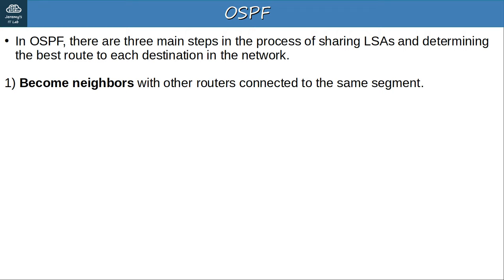Each of these areas maintains a unique LSDB. The backbone area — area 0 — is special: all other areas must connect to it. A network design where area 1 is not connected to area 0 and only connects to area 2 is not allowed in OSPF. Routers with all interfaces in the same area are called internal routers. In this diagram, there are internal routers in area 0, area 1, area 2, and area 3 — routers with all of their interfaces in the same OSPF area.